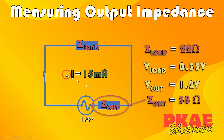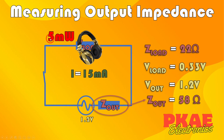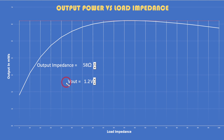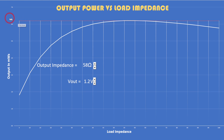We now know the output impedance is 58 ohms, and with 15 milliamps running through the circuit, the headphones are receiving 5 milliwatts of power at the volume and 1kHz sine wave I had set. Pumping those figures into my Excel chart — with V-out at 1.2V and output impedance at 58 ohms — you can see that at 58 ohms we peak on output power. Rather than the 5 milliwatts we had with 22 ohms, matching to 58 ohms gives well over 6 milliwatts. So again, matching input and output impedance gives you maximum power. That's how you measure output impedance. If you found this useful, please click like and subscribe.